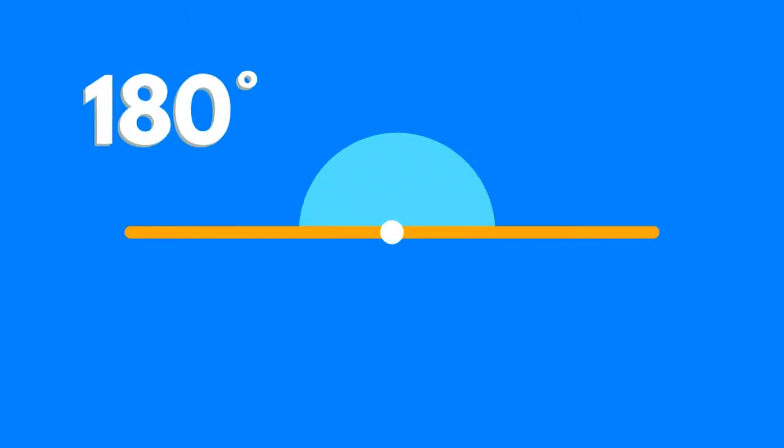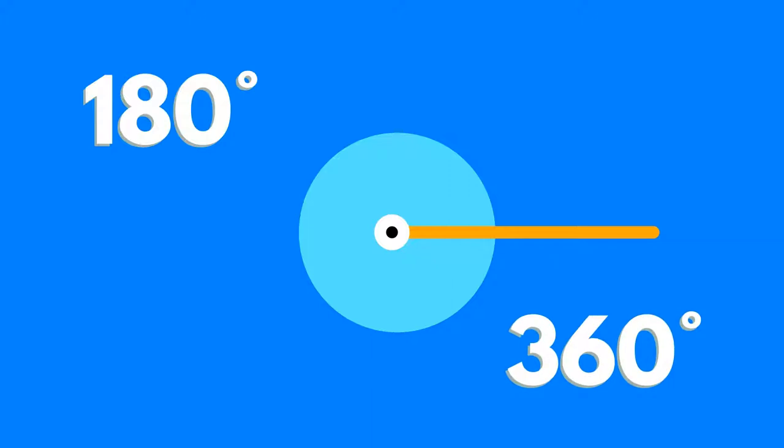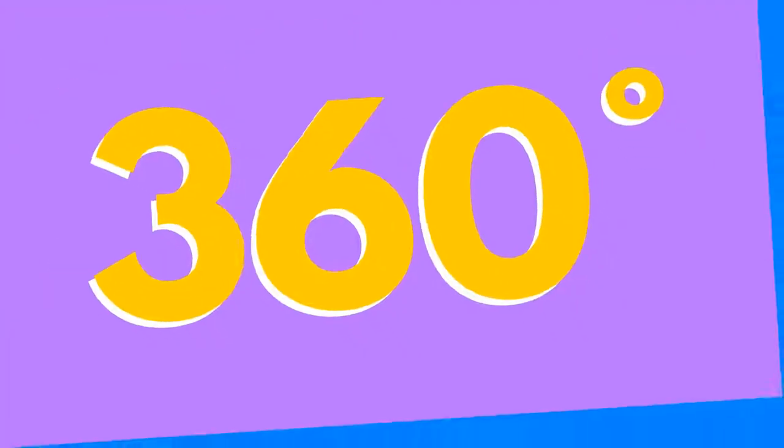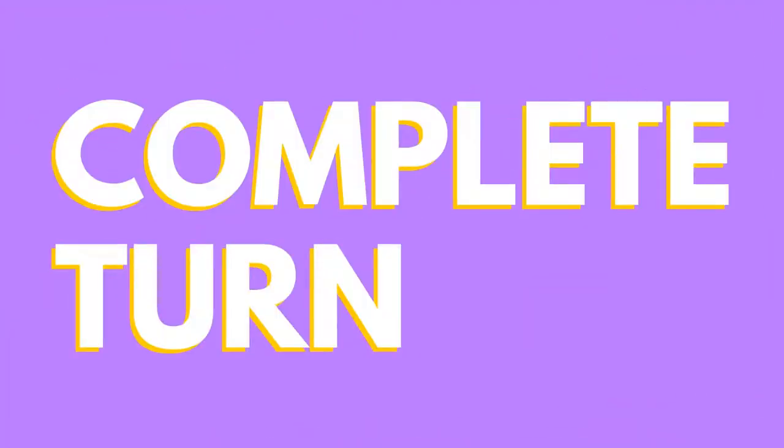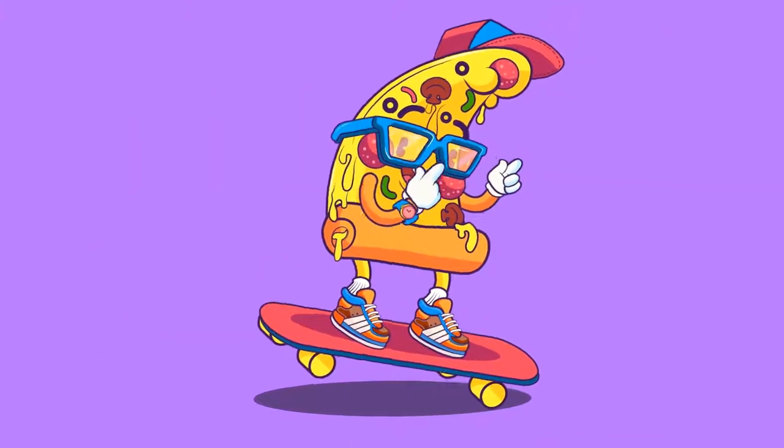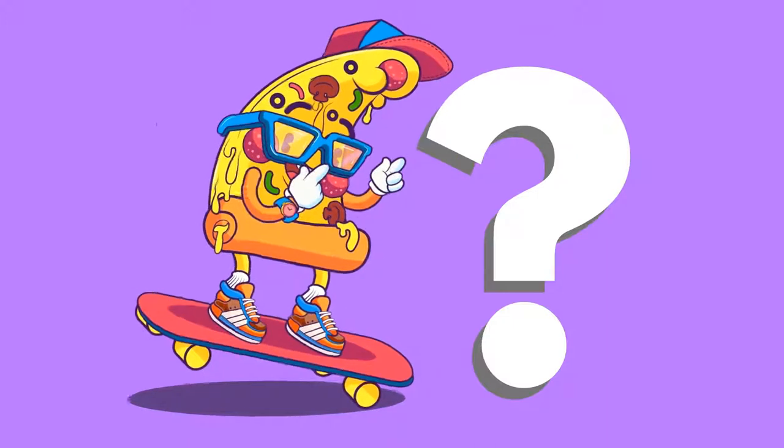In a straight line, angles add up to 180 degrees. Angles around a point add up to 360 degrees. There are 360 degrees in a complete turn or a full circle. Skateboarders describe their moves using angles. Can you think of some examples?